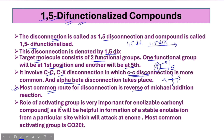Now we talk about the role of the activating group. In an enolizable carbonyl compound, you can see an activating group which is very important. The activating group is used to generate a stable enolate ion from a particular side. This enolate ion will then attack on the alkene or the alpha-beta-unsaturated carbonyl compound. The most common activating group is the ester group.